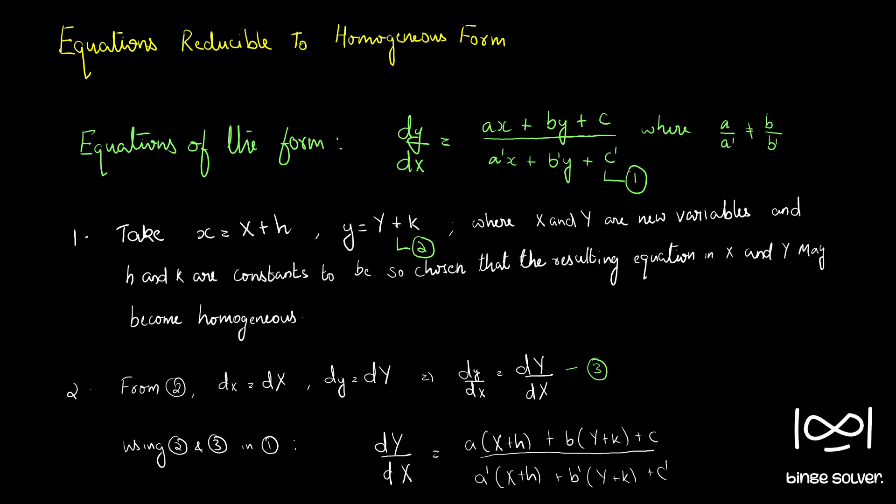In the previous section, we took questions where dy/dx was in homogeneous form — that is, dy/dx was a function of y/x. Now we are going to see questions that can be reduced to homogeneous form. Initially they will not be in homogeneous form, and with a suitable substitution, the question can be reduced to homogeneous form. Then we can solve it just like the questions discussed in the previous section.